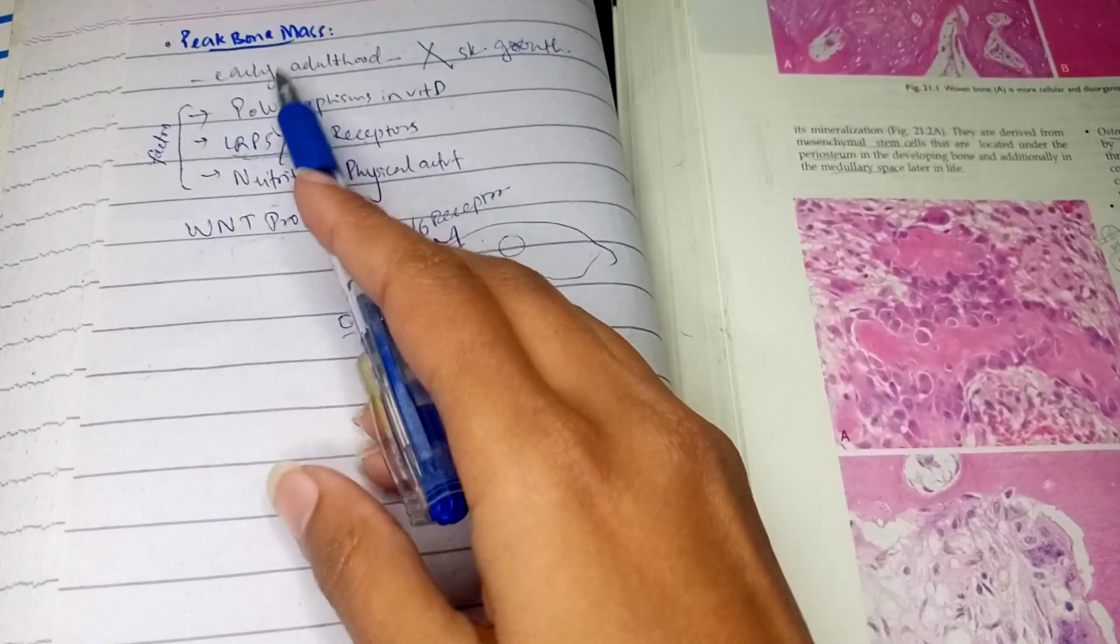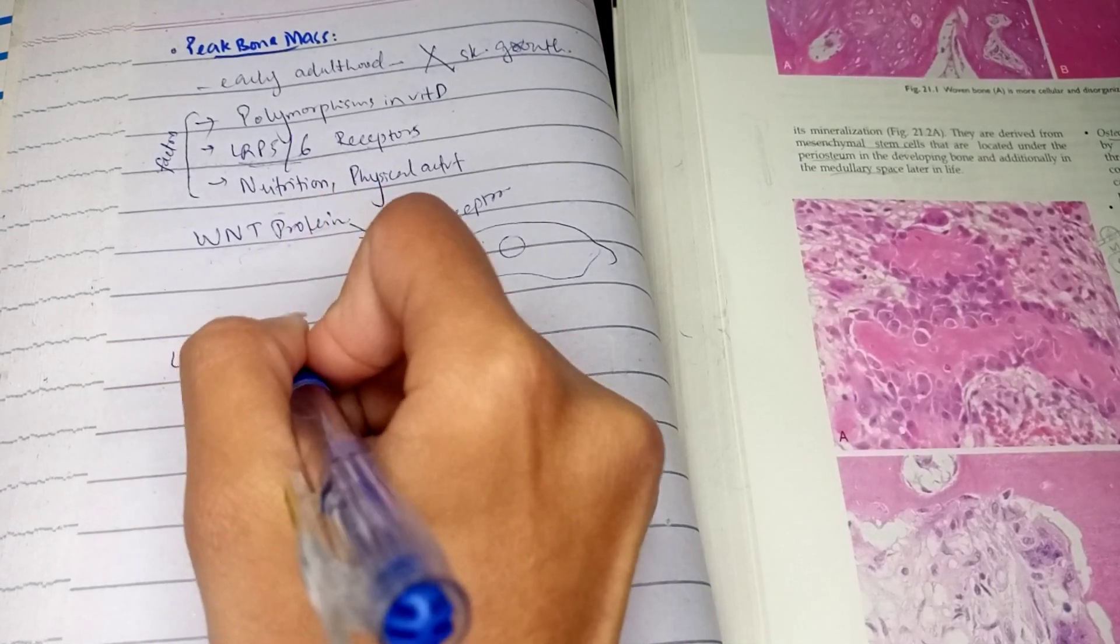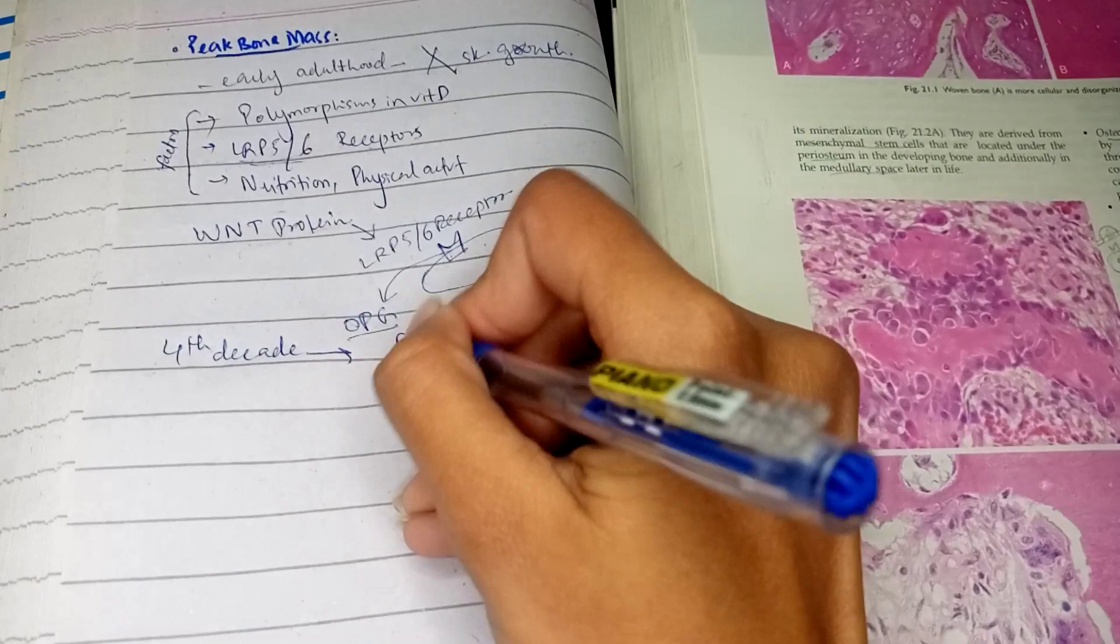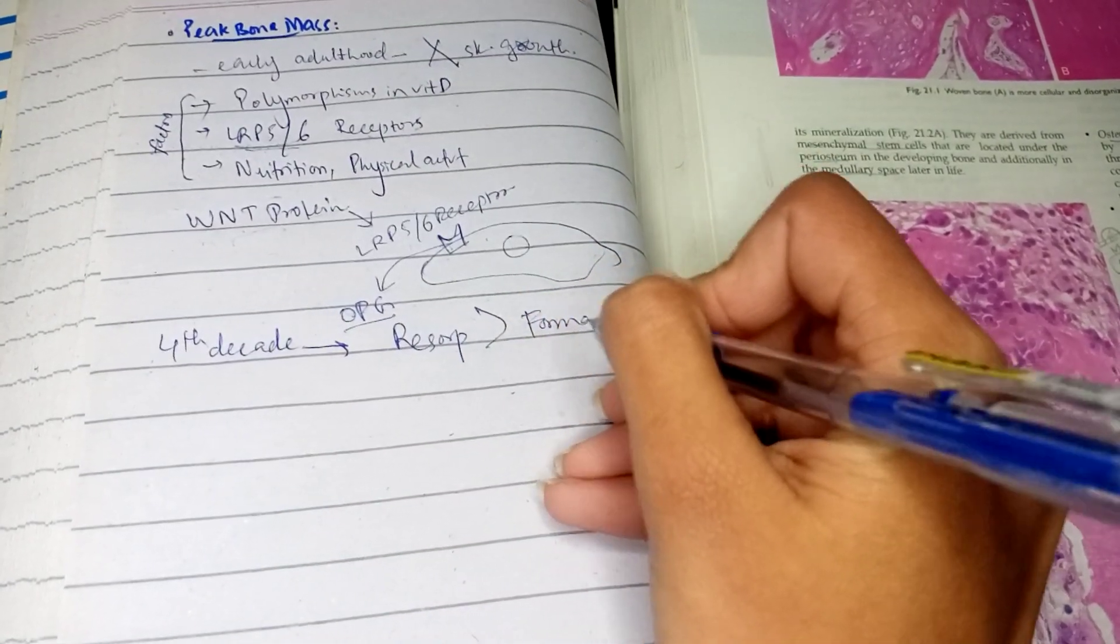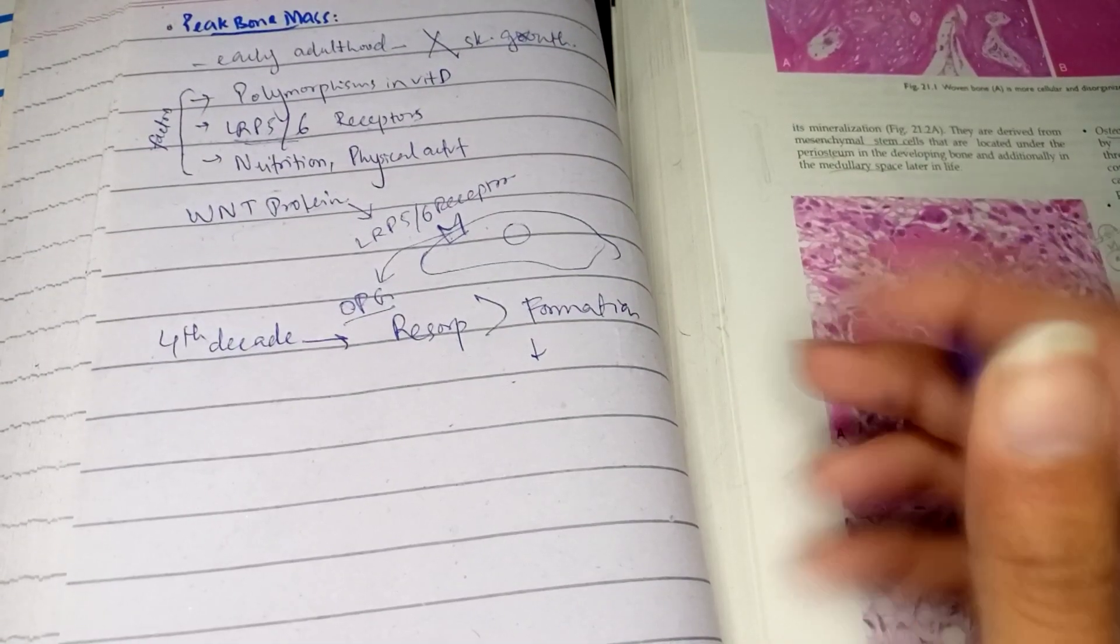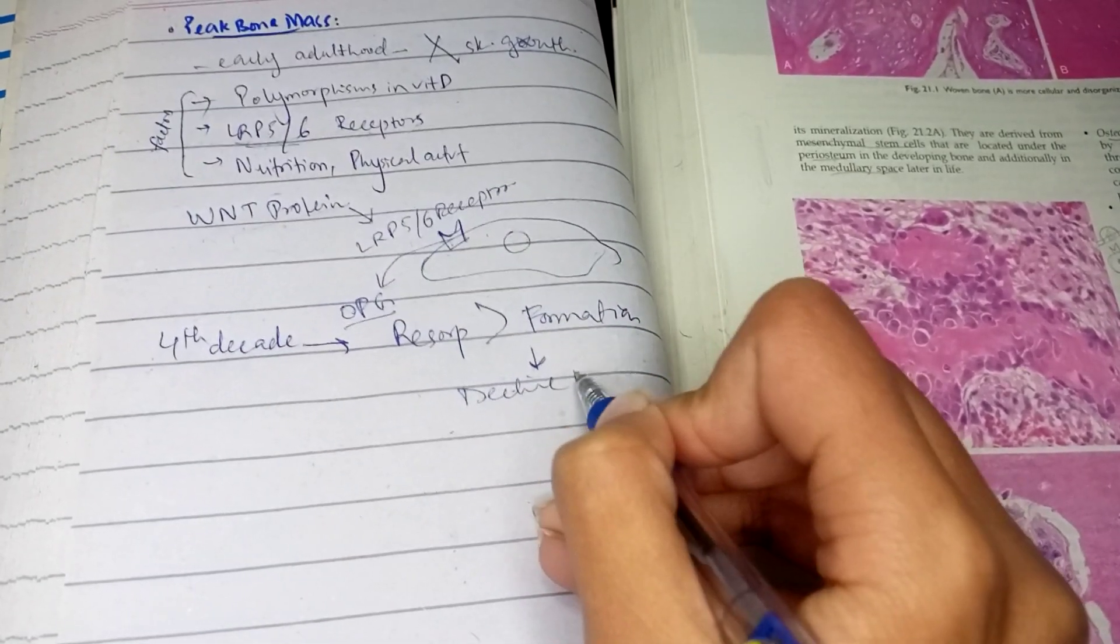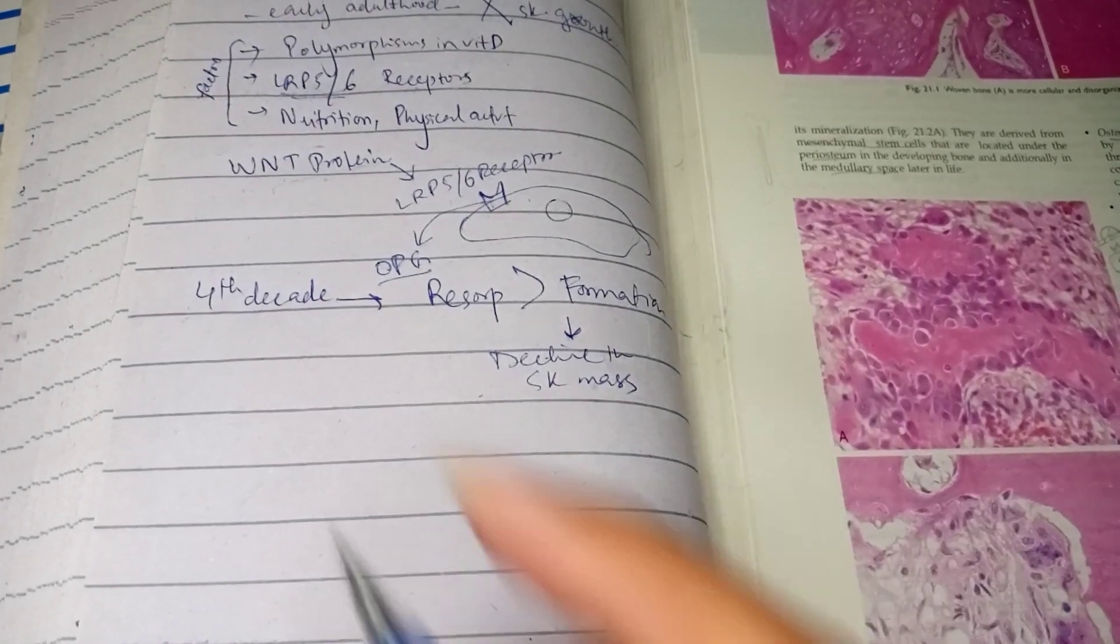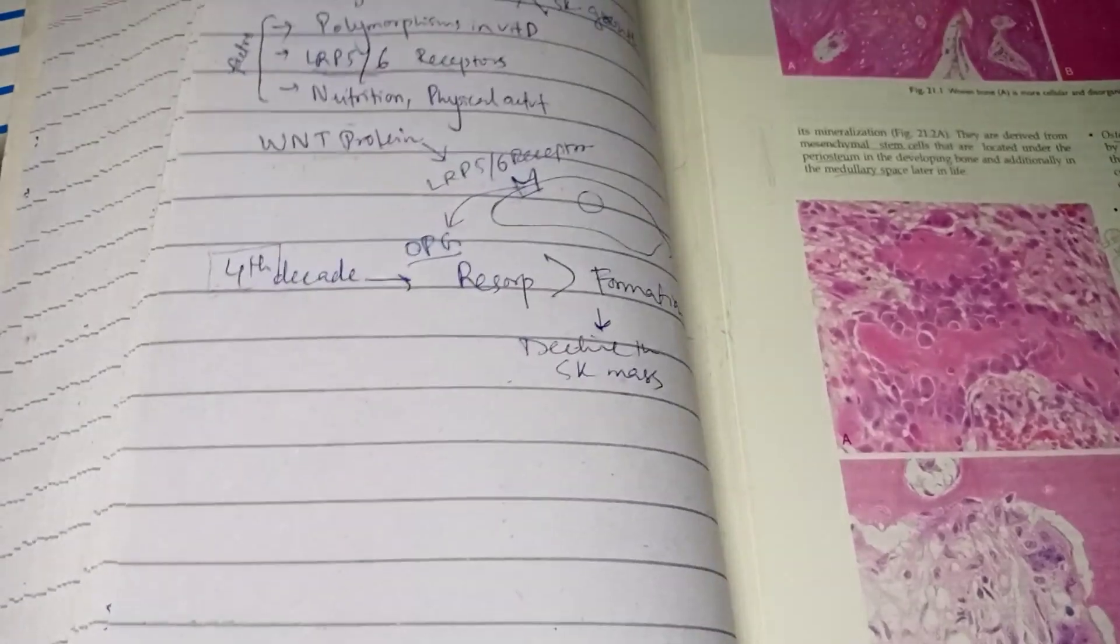Coming back to peak bone mass, in the fourth decade, resorption exceeds formation. There is more resorption of bone compared to formation. That is why this leads to a decline in skeletal mass in the fourth decade.